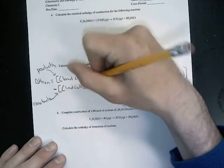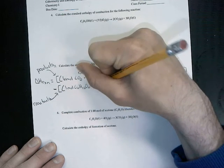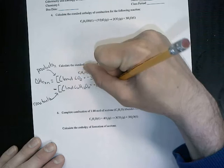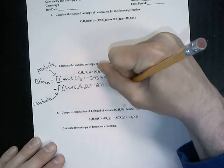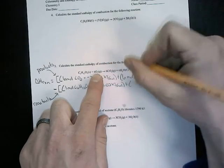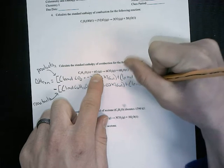That is negative 1,273.02 kilojoules per mole. So negative 1,273.02 kilojoules per mole. There is an additional reactant, so we have plus the number of moles of O2, so 6 moles of O2.